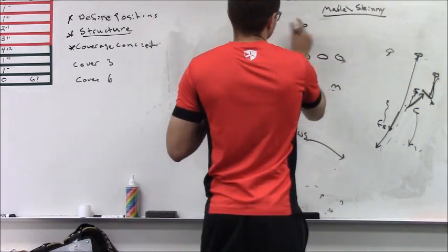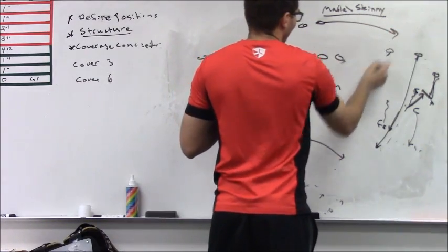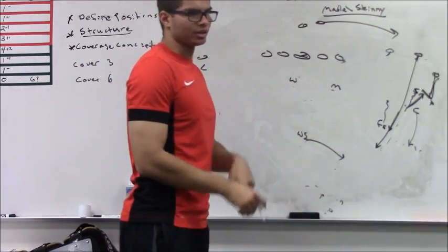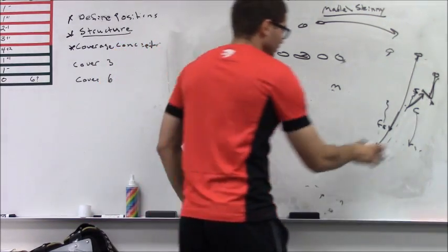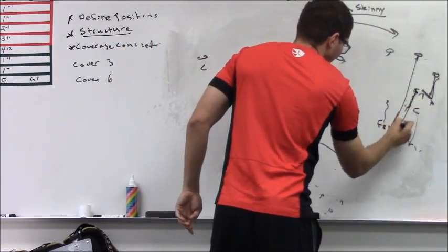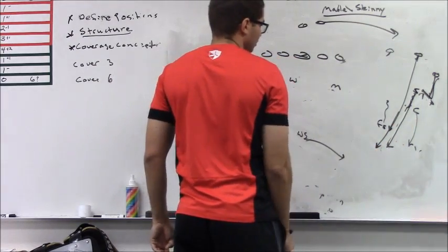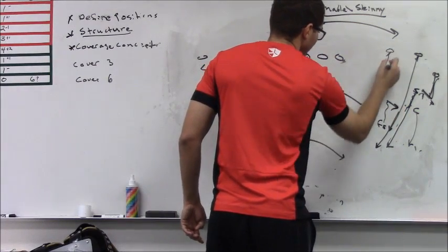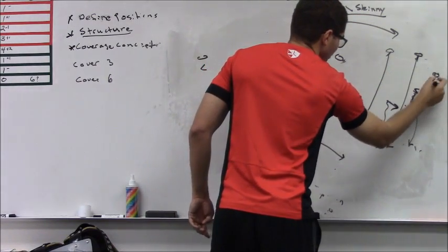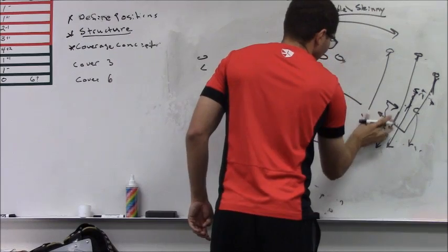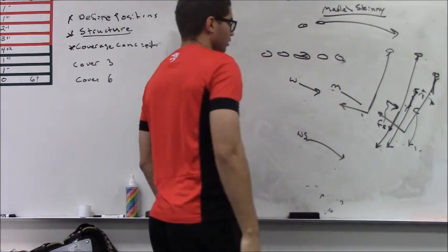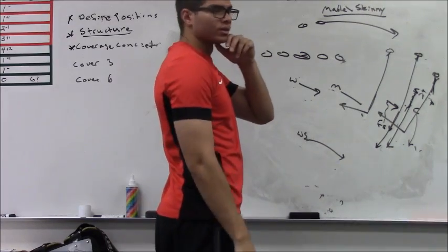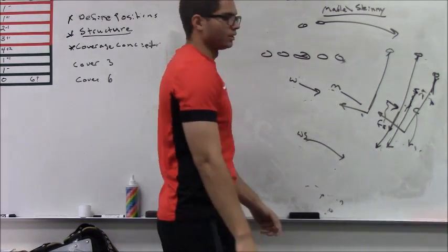4 strong, where the back is coming to the flat is a problem in skinny. Because if he's running with a 3 vertical, you really stress the windows between the curl and the hole defender, when you play skinny.